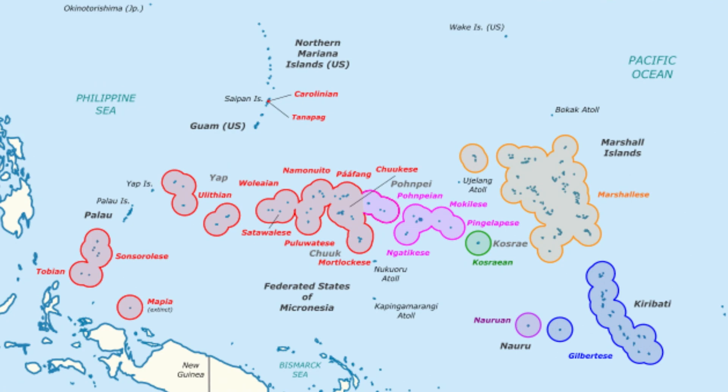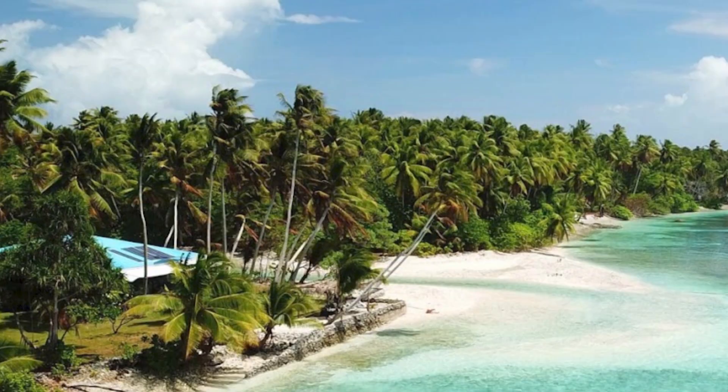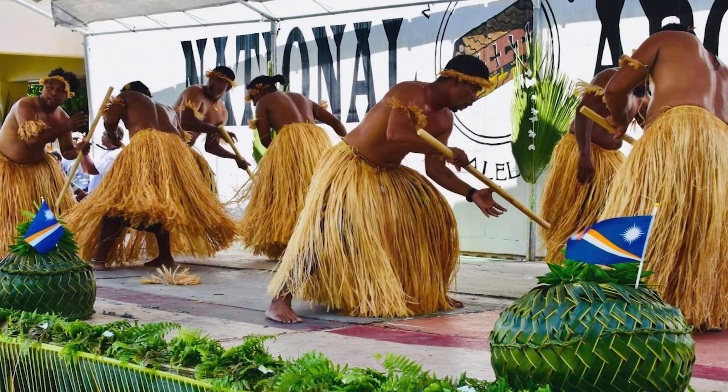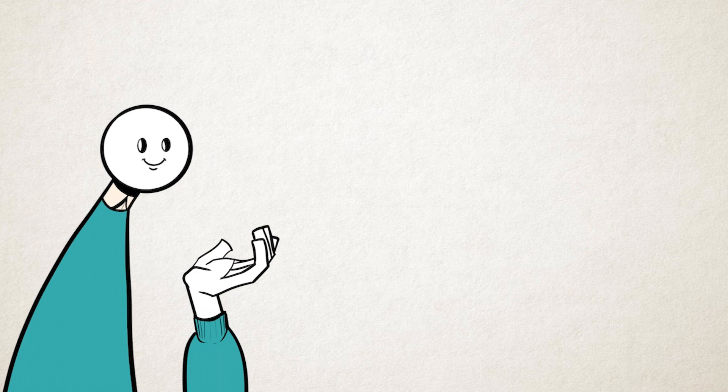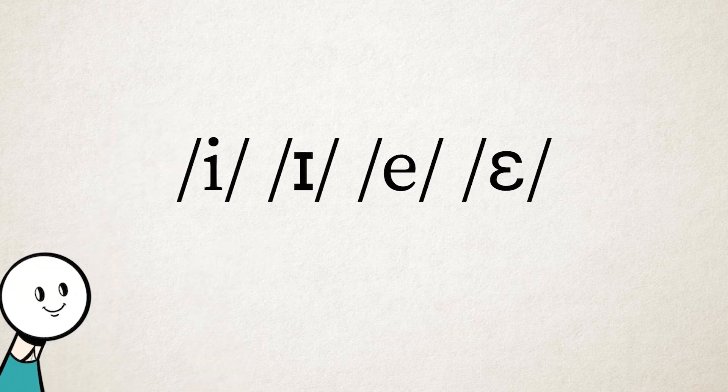Marshallese is a Micronesian language spoken in the Pacific, in, you guessed it, the Marshall Islands. The language and its culture are deserving of its own video, but I'm going to focus on the most debatable part of the language: the vowels.